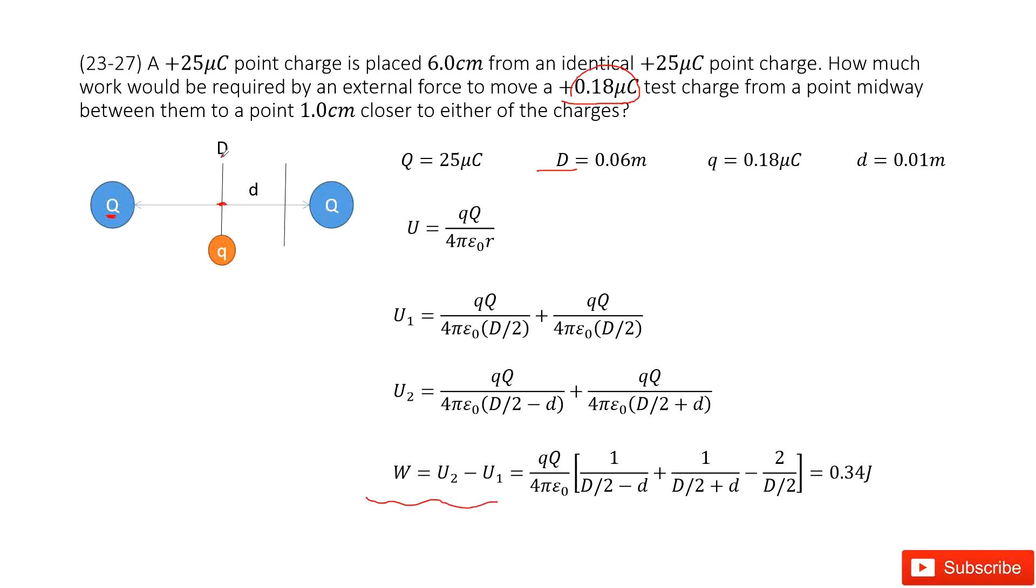The distance is D over 2 because this test charge is at the middle. And similarly, we can get another term from the other point charge. This term.